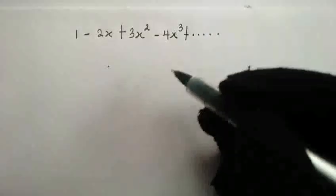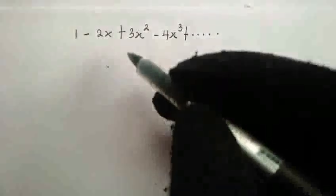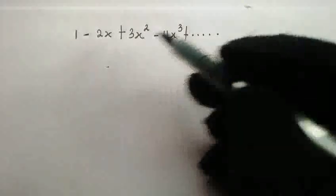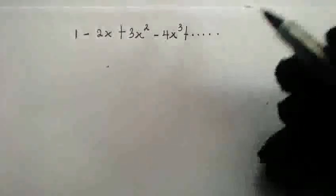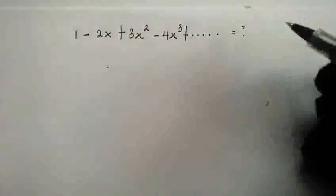Today we have the following infinite series. We have 1-2x plus 3x squared minus 4x cubed plus all the way to infinity. How do we sum up this series?